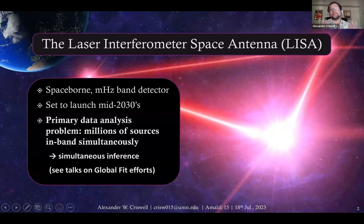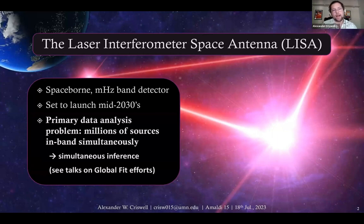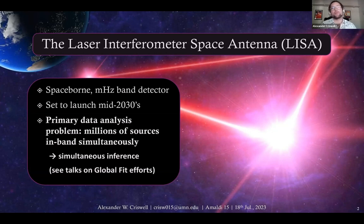LISA is a space-borne gravitational wave detector launching in the mid-2030s. The primary analysis challenge is that LISA, instead of seeing individual chirps like ground-based detectors or a single stochastic background, will have millions of sources in the band simultaneously. The solution the field is converging towards is a global fit — statistically fitting for all of these sources simultaneously in a Bayesian framework.